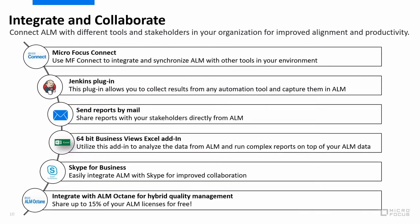We also make it easier for you to connect and control external test automation tools coming from Selenium or any other third-party, homegrown, or open-source tools you use for automation. If you run them using Jenkins, you can easily collect these results, push them to ALM, capture them, store them, and get all the benefits of ALM such as traceability and advanced reporting in analytics. You can also easily share reports and send them directly from ALM by email so other stakeholders can view this information. We've also improved our integration with ALM Octane for hybrid quality management, so now you can push test results from ALM to Octane to enjoy a single view of all the testing activities done in any of these tools.